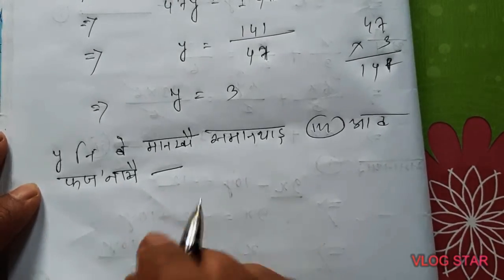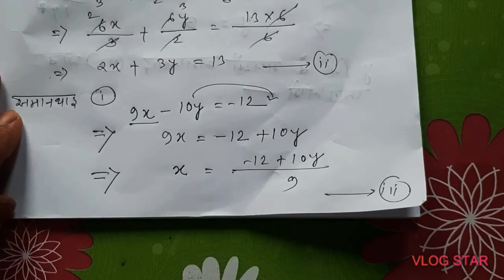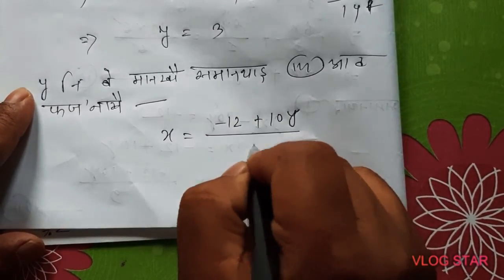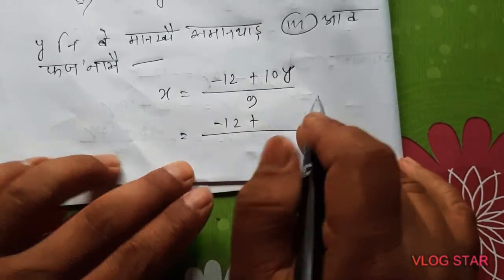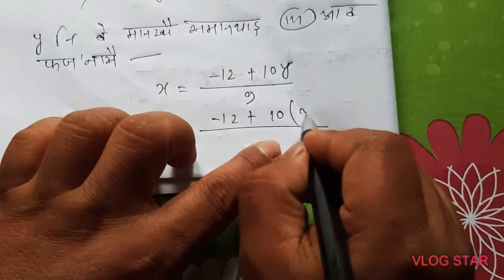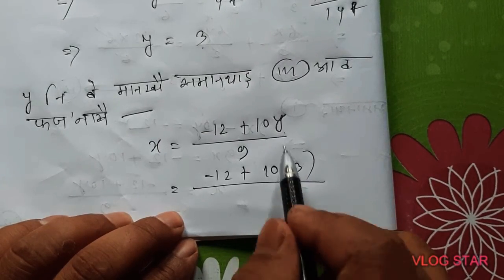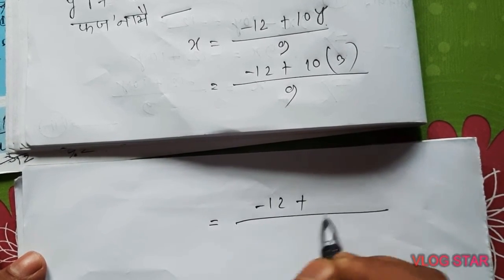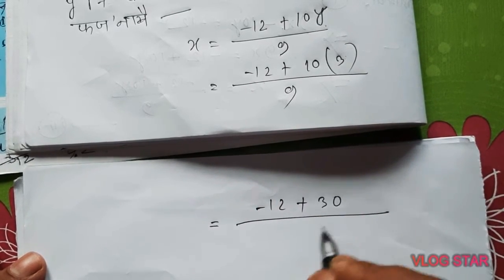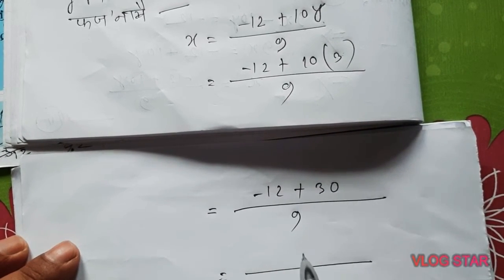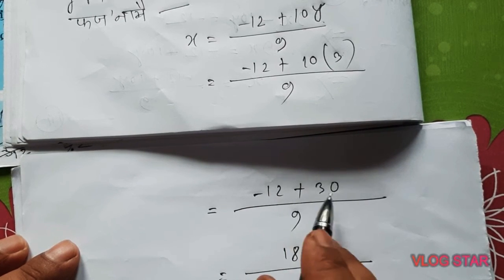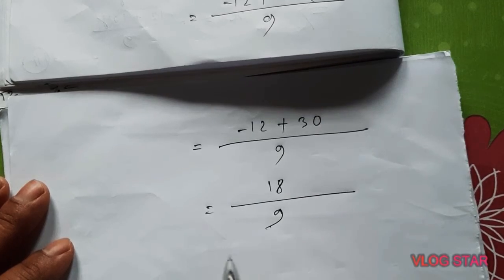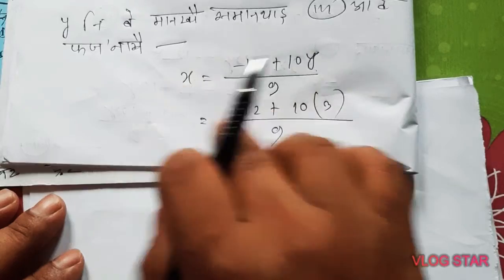Substituting the value of y in equation number 3. Equation number 3 is x equal to minus 12 plus 10y divided by 9. So we get minus 12 plus 30, which is 18. We get 18 divided by 9, which gives us 2.